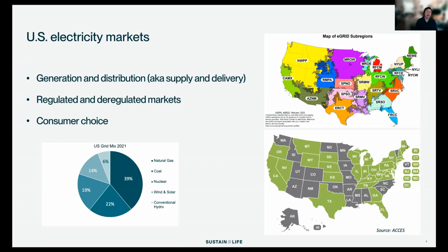For our purposes there are basically two classes of activities happening on the grid: generation and distribution — also referred to as supply and delivery. On the generation side you have all the power plants and renewable generators feeding electricity into the grid. This blend of different generation is referred to as the grid mix. The US grid mix from 2021 was about 60% fossil fuels and 20% renewables. This grid mix is dynamic — it changes year to year and even minute to minute based on what resources are dispatched to meet demand. The grid mix is also where we derive emission factors, so a higher proportion of renewables results in a lower emission factor.